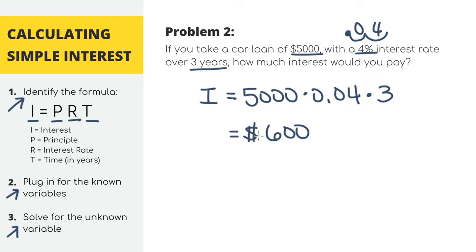And this means that you are paying $600 more to be able to borrow the money. So over the span of three years, you'll be paying a total of $5,600 instead of just $5,000 if you didn't have to take out the loan.